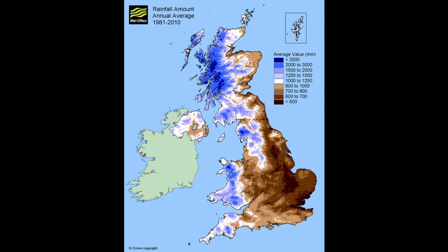This chart shows the average rainfall in the UK over a 30-year period. And as we can see, Birmingham gets between 700 and 800 millimeters of total rainfall a year. Whereas there are parts of the UK that get more than 3000.